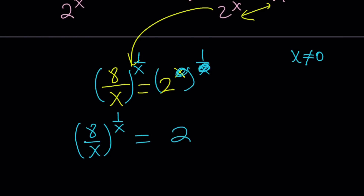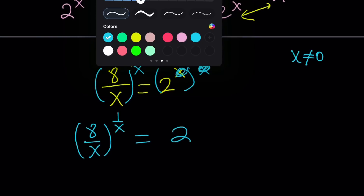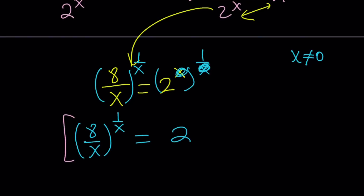This is what I have: all the variables on one side and a number on the other side — kind of like f of x equals 2. But this is not good enough. My base is 8 over x and my exponent is 1 over x — they are different. Why not make them the same? If my exponent becomes 8 over x, we'll be in a much better position. Very easy — algebraically. That's why algebra is so cool.